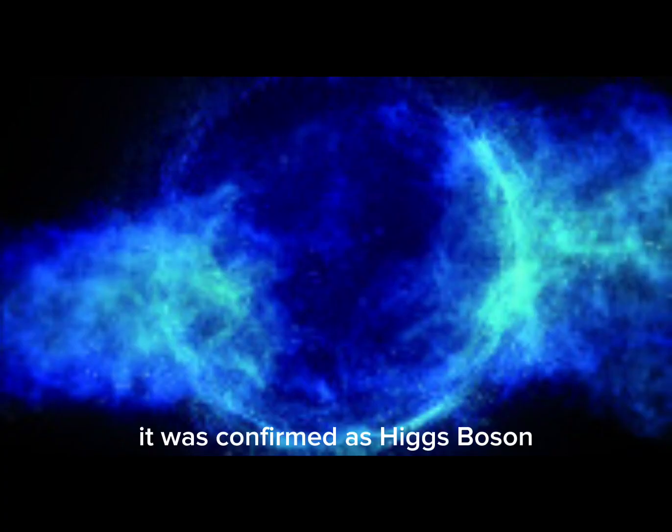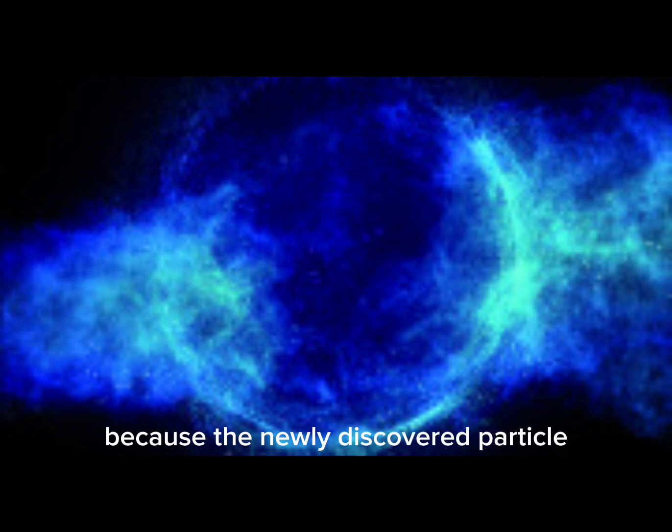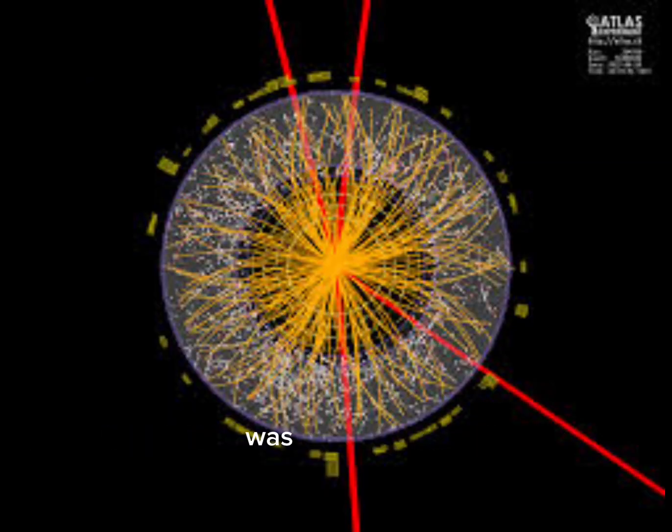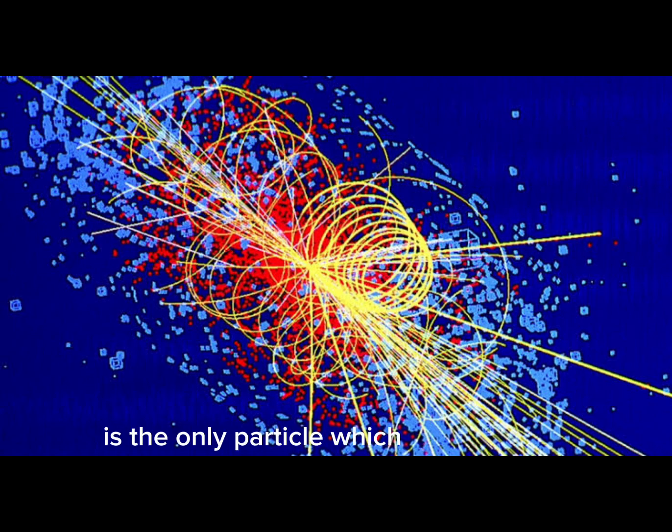It was confirmed as the Higgs boson because the newly discovered particle had no electrical charge, was short-lived, and had a mass compatible with theory. In the following years, it was proven that the Higgs boson is the only particle with zero spin.